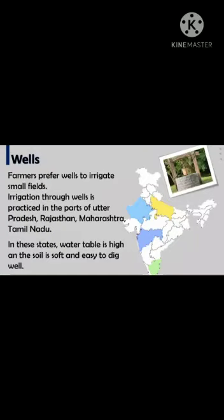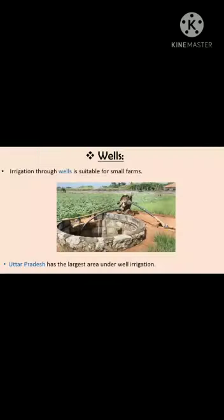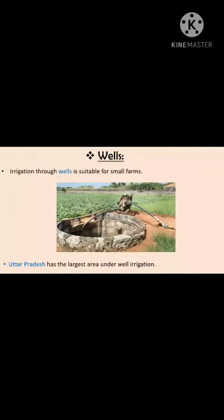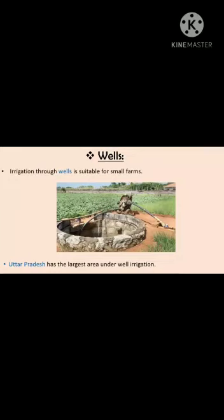Wells में पानी कैसे आता है? ये rain water — बारिश का पानी जो जमीन के अंदर already available होता है due to rain — वही पानी हम wells के through access करते हैं। Wells ज़्यादातर farmers use करते हैं अपने fields को irrigate करने के लिए, crops को पानी देने के लिए। और ये wells अभी भी ज़्यादातर उत्तर प्रदेश, राजस्थान, महाराष्ट्र या तमिलनाडू में use हो रहे हैं — ये वो places हैं जहाँ की land काफी soft है और वहाँ wells खोदना काफी easy होता है।